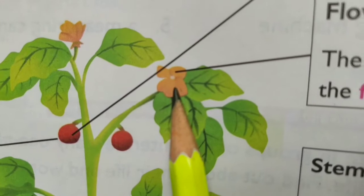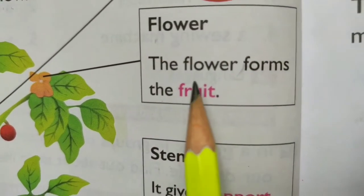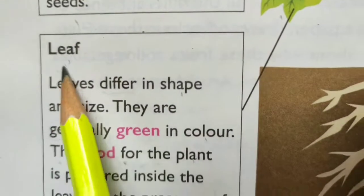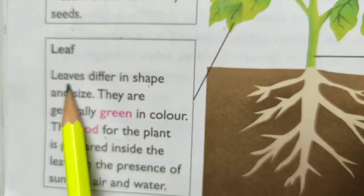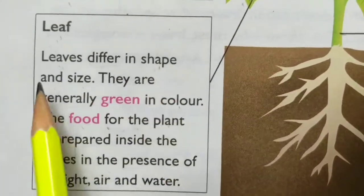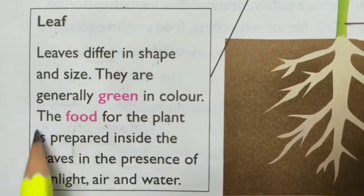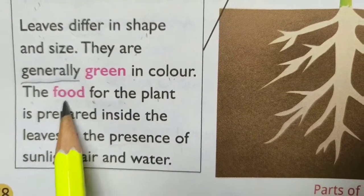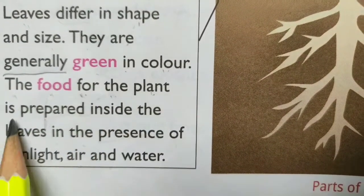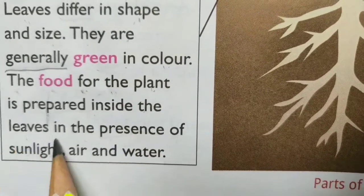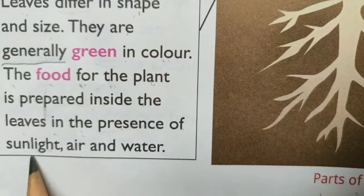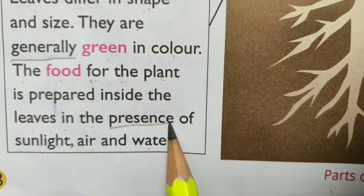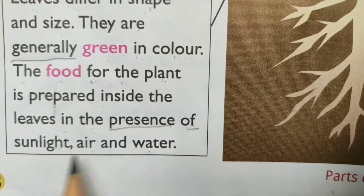Flower. The flower forms the fruit. Leaves differ in shape and size. They are generally green in color. The food for the plant is prepared inside the leaves in the presence of sunlight, air and water. Underline the word 'presence' and learn the spelling of 'presence'.